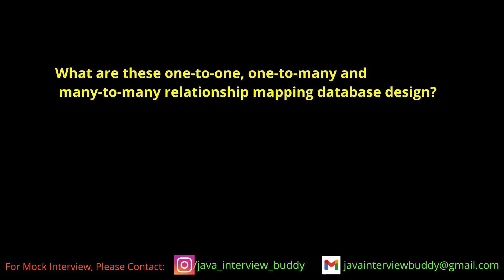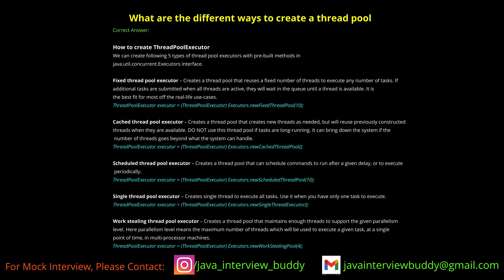What are the different ways to create a thread pool? One way I know is using the Executor framework — you can create a fixed thread pool, a cached thread pool, or a scheduled thread pool executor. Other than that, you could write your own implementation, but I'm not sure about that. The thread pool allows a defined number of threads to run so they are not idle and can be utilized.